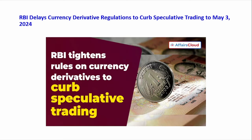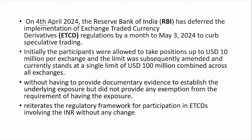Moving to the first news: RBI delays the currency derivative regulations to curb speculative trading to May 3, 2024. On April 4th, 2024, the Reserve Bank of India deferred the implementation of exchange-traded currency derivative regulations by a month to May 3, 2024, to curb speculative trading. Before understanding this news, we have to understand what is ETCD.